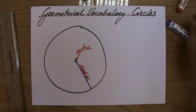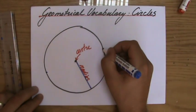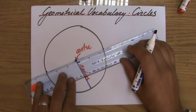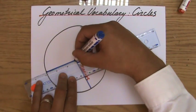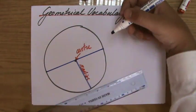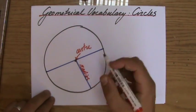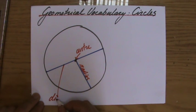If we draw a line from one side of the circumference to the other side of the circumference, and that line goes through the center of the circle, then we have a radius and another radius, and then that entire line we call the diameter. So that is the diameter, which is two times a radius.